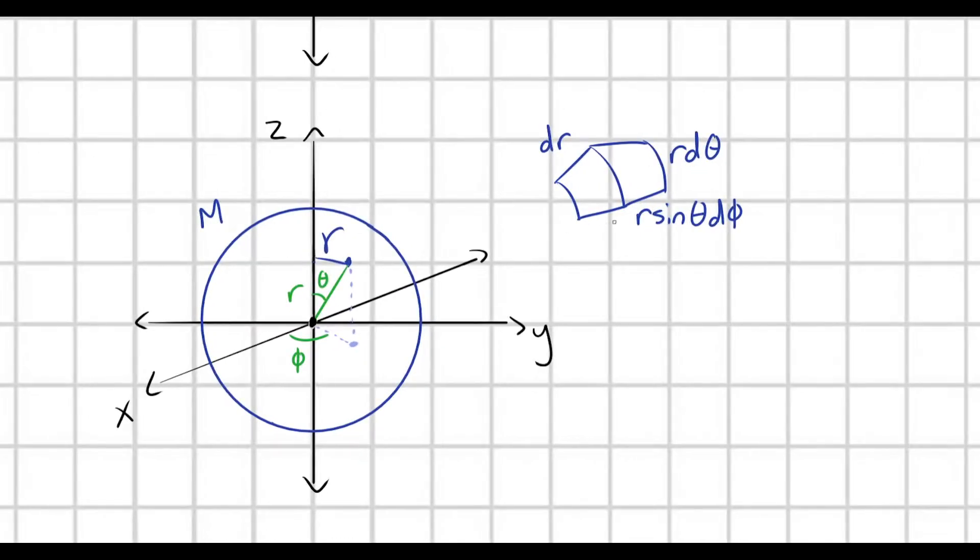And the result, I'm sure there are lots of videos that do this in more detail, is that we get a volume element that's going to look something like this, that has some component dr, some component r sine theta d phi, and some component r d theta.